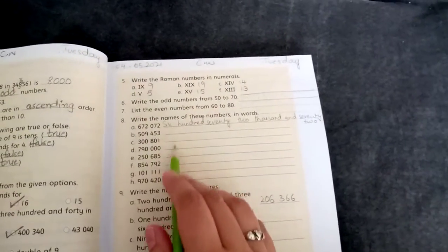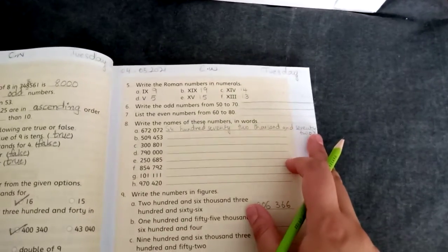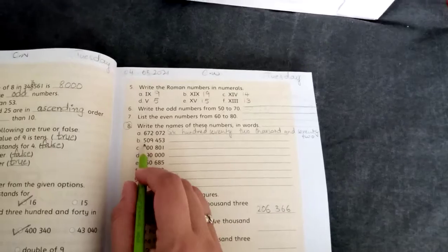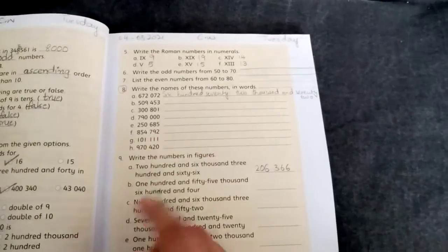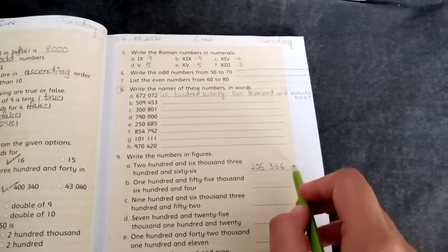If this question 8 is not completed in your book then you can copy it in your book, so you can copy it in your book. Question 9 is written in figures and in numbers.